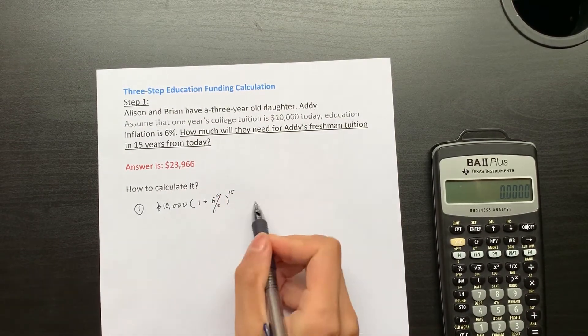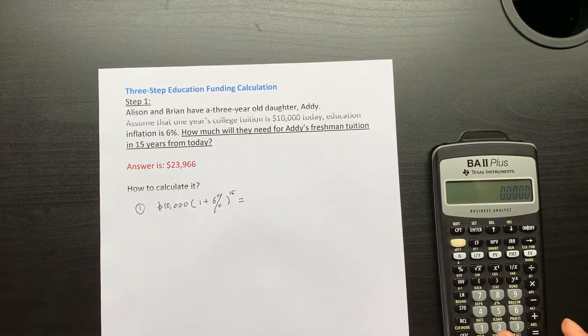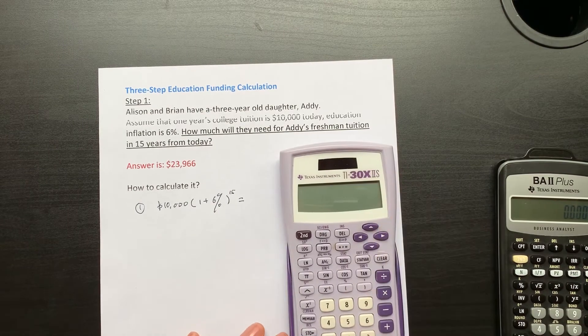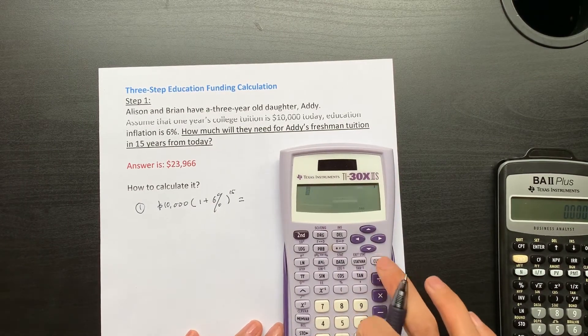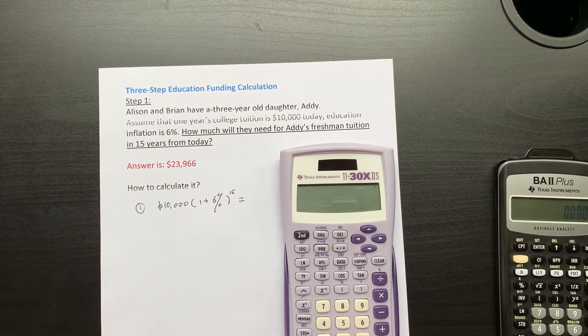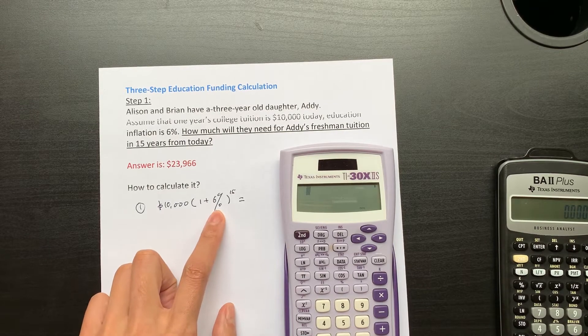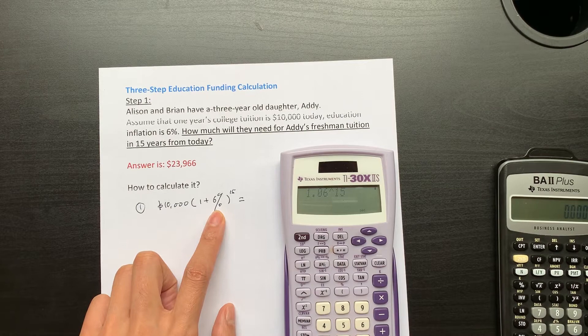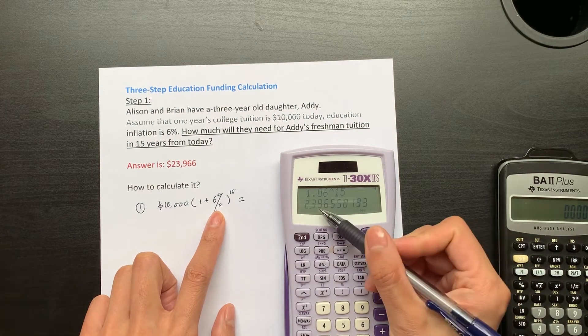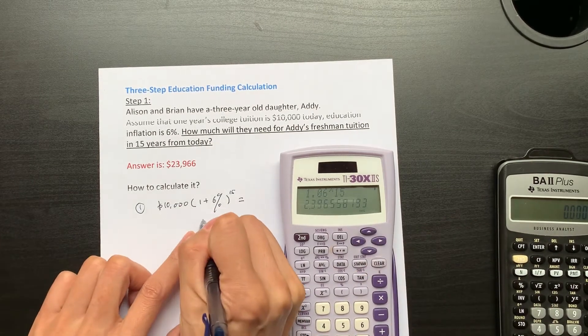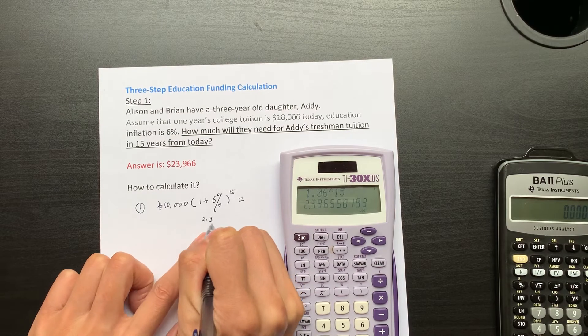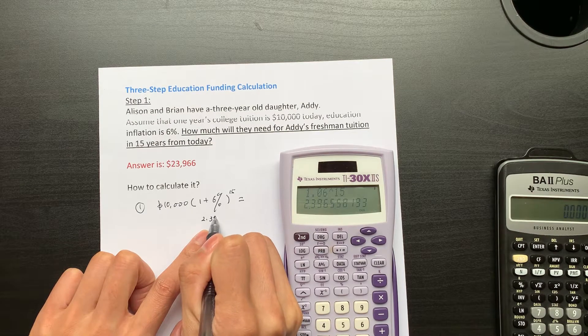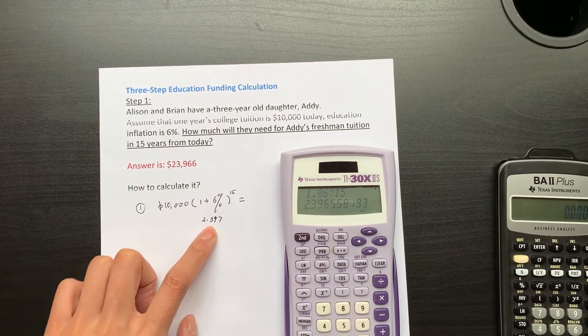So you're compounding this. I'll use this calculator. You calculate 1.06 to the power of 15. This gives you about 2.39, or 2.397.